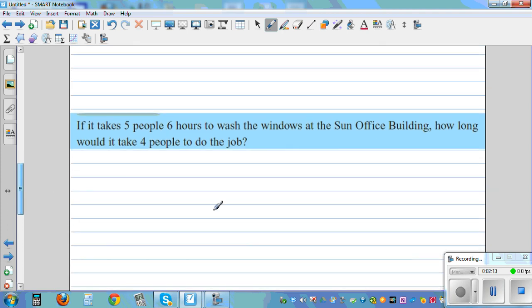Let's look at a very simple next example. If it takes 5 people 6 hours to wash the windows at the Sun Office Building, how long would it take 4 people to do the same job? So you got P for people and H for hours. So here you got 5 people needing 6 hours. So basically this is a 30 hour job. If you think in a different way this is a 30 hour job.